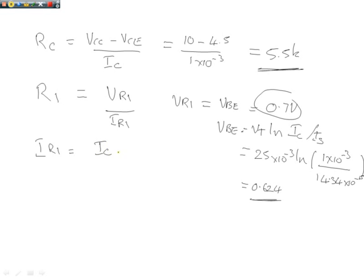Let's calculate what IR1 is. That's going to be equal to IC divided by beta, and again, the rule of thumb, multiplied by 10.